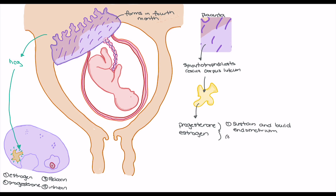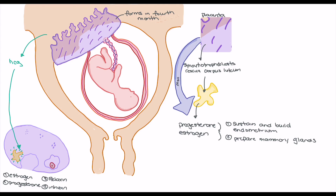Progesterone and estrogen are also going to prepare the mammary glands for lactation, helping the body get ready for milk production when the fetus is born. Around the three-to-four month mark, the placenta is fully formed and those syncytiotrophoblasts can take over secretion of progesterone and estrogen directly.